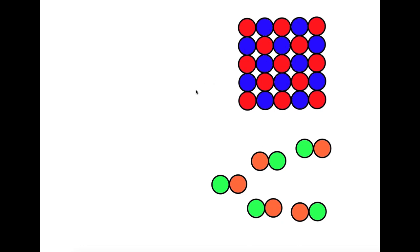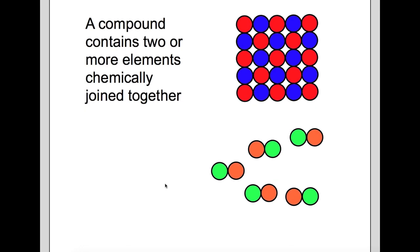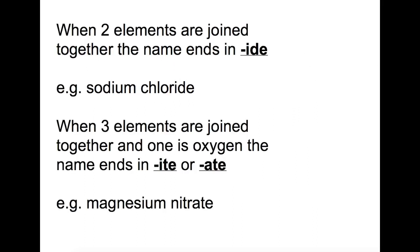Here we have two pictures. Both of these pictures represent compounds. A compound contains two or more elements which have been chemically joined together. When two elements are joined together, the name of the compound will end in the letters IDE, for example sodium chloride, made of sodium and chlorine.